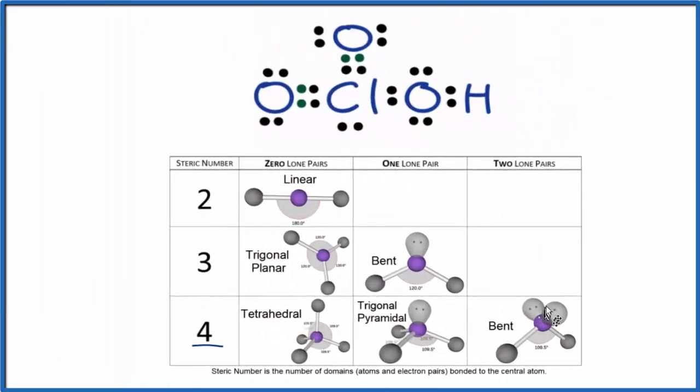So this table helps us find the molecular geometry for HClO3. But you can also imagine that these groups here, when they're around that central chlorine, they'll push away from each other. And that will result in the molecular geometry.